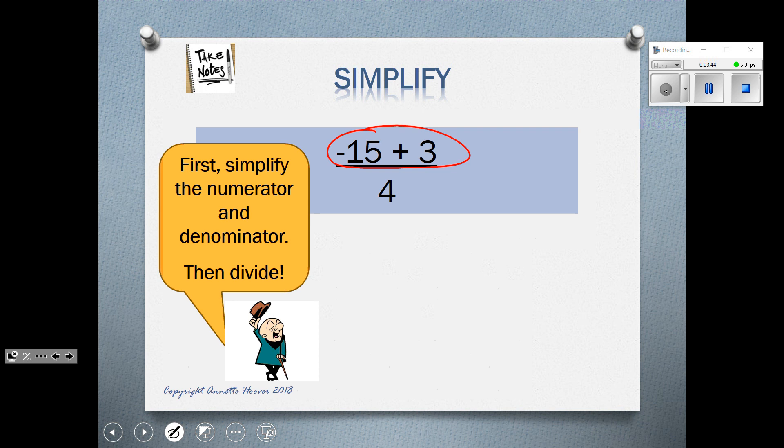Negative 15 plus 3 is negative 12 divided by 4. Now, we have our division of negative 12 divided by 4. One negative sign, so it would be negative 3.